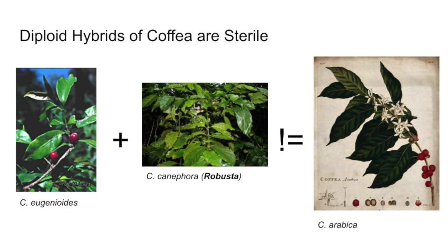Different species of Coffea, when they hybridize in a normal sexual way, don't actually create a fertile offspring. So if you were to cross canephora and eugenioides typically — taking pollen from one plant and putting it onto the flower of another — you wouldn't get Coffea arabica; you would get something more like a mule, something that's infertile. And when we're talking about coffee, we need fertile plants because what we're actually drinking is a coffee seed. A seed represents a fertilized egg that is capable of reproducing itself. And what we know about Coffea arabica is that it actually is fertile, and it does that in a very special way.